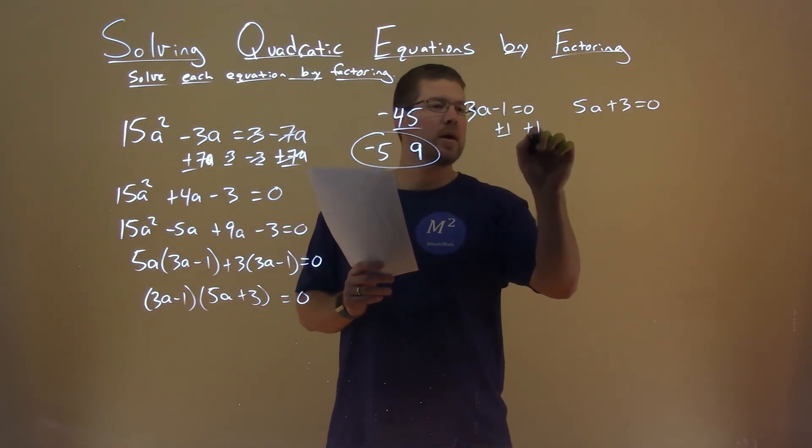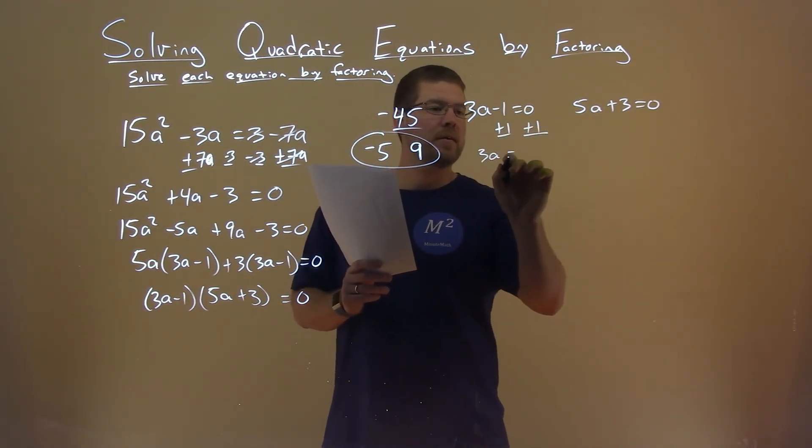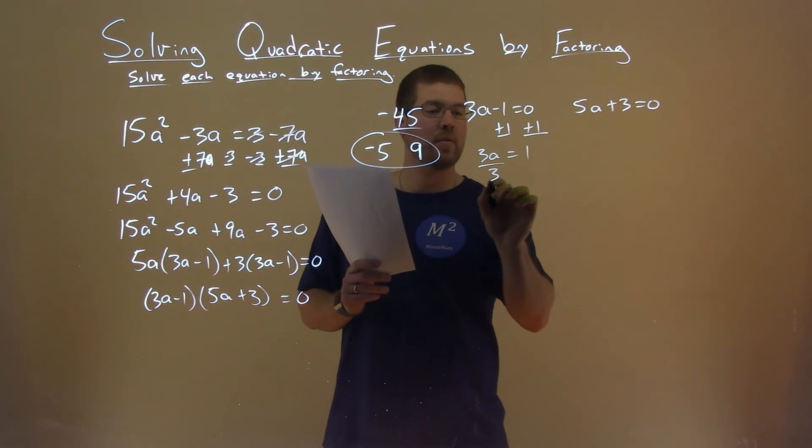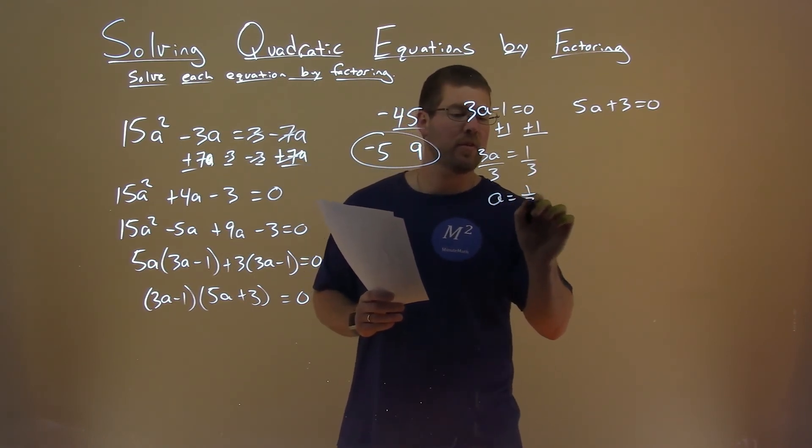We add 1 to both sides. 3a equals positive 1. Divide both sides by 3, and a equals 1/3.